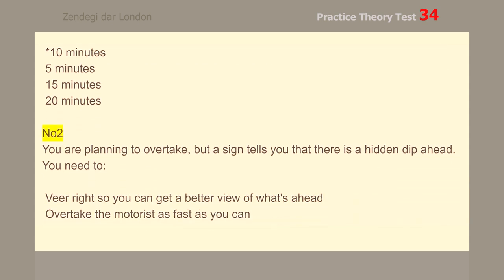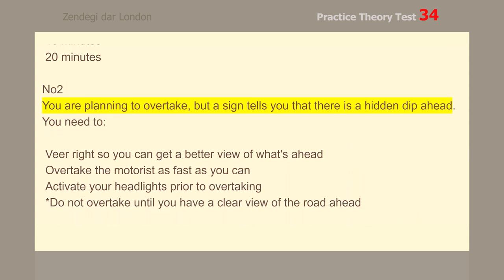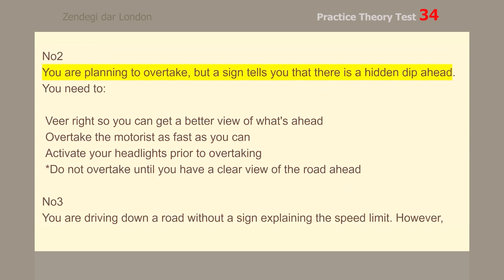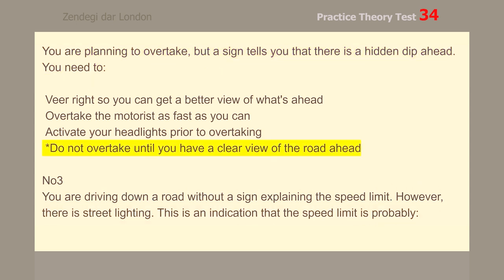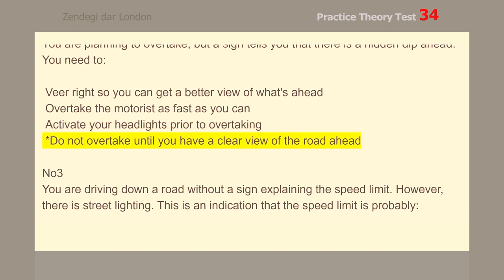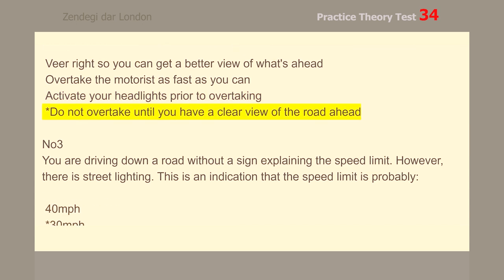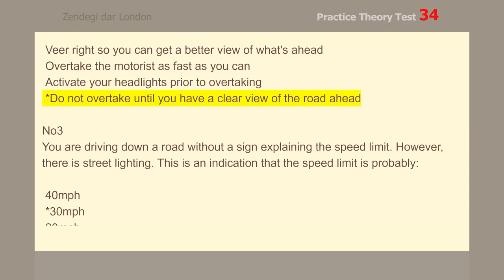Number 2. You are planning to overtake, but a sign tells you that there is a hidden dip ahead. You need to not overtake until you have a clear view of the road ahead.